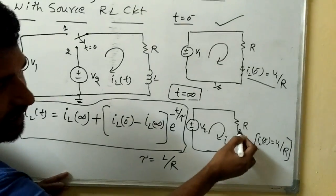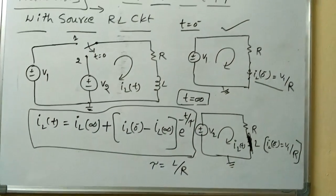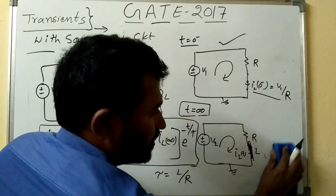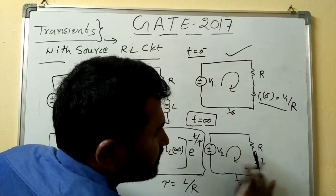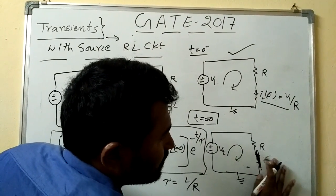the source, now the source is connected to V2, right, this is V2, again, this inductor will become the short circuit, and this will become the iL of infinity, right.